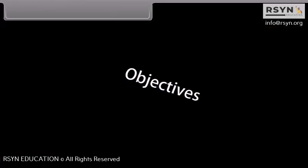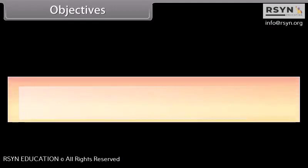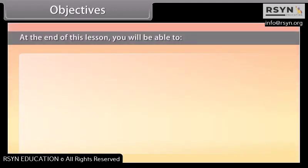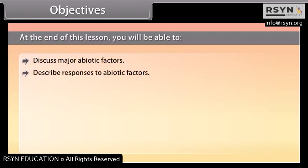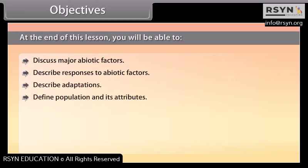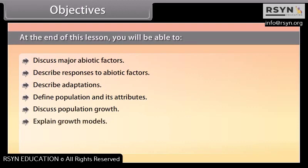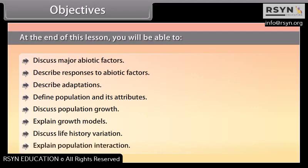Objectives: At the end of this lesson, you will be able to discuss major abiotic factors, describe responses to abiotic factors, describe adaptations, define population and its attributes, discuss population growth, explain growth models, discuss life history variation, and explain population interaction.